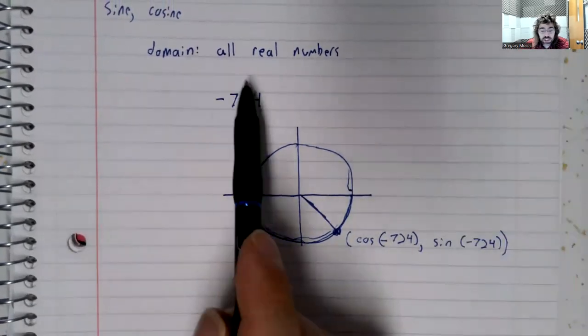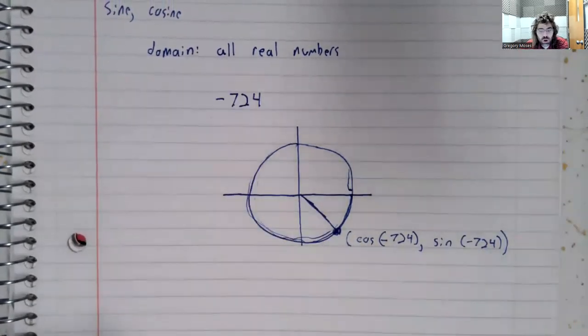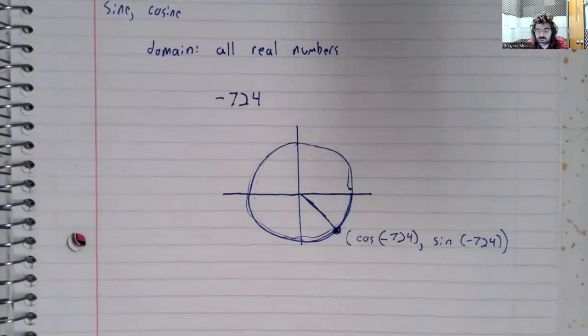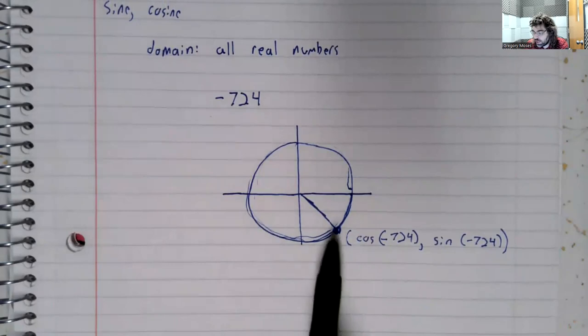So any number, big or small, positive or negative, you go around the circle that many radians or that many degrees. And wherever you wind up.